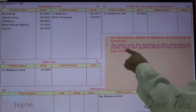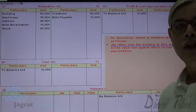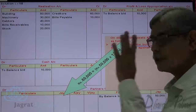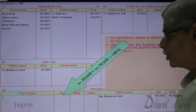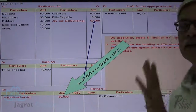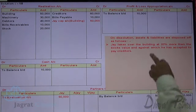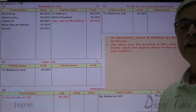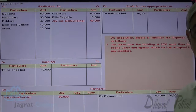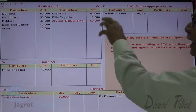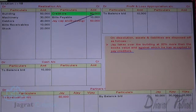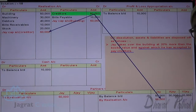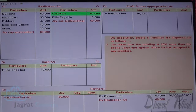Jay takes over the building at 20% more than the book value: 50,000 × 120% = 60,000. Jay is the receiver, so Jay's capital account is debited and realization account is credited for 60,000. Against this, he has accepted to pay the creditors of 60,000. Creditors are settled, so realization account is debited 60,000 to Jay's capital account credit for creditors assumed by Jay.